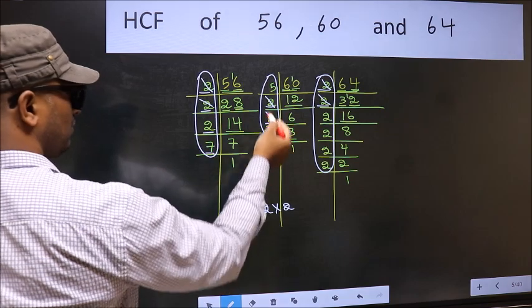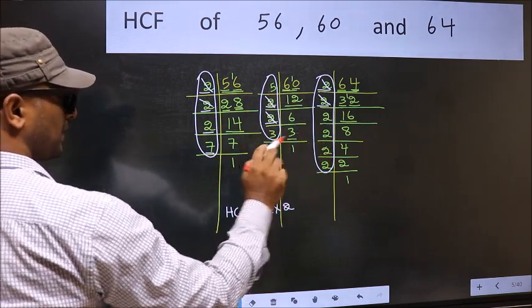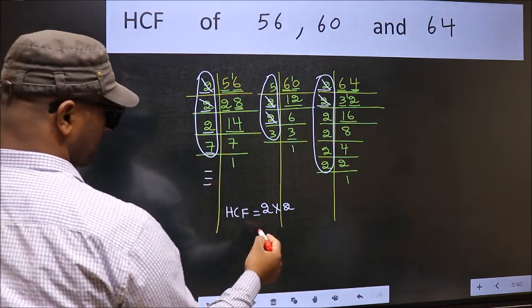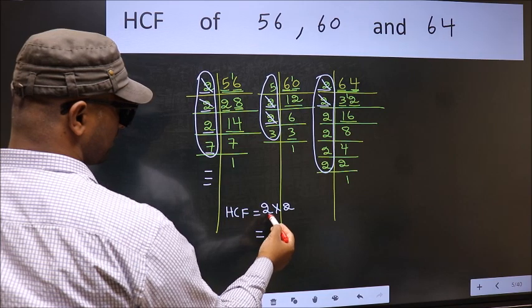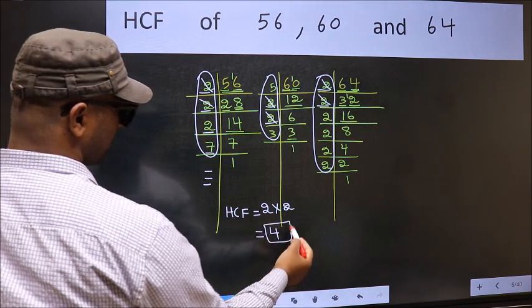Next number 7. Do we have 7 here? No. No need to check in the other place. No more numbers have been left out. Therefore, our HCF is 2 times 2 equals 4. 4 is our HCF.